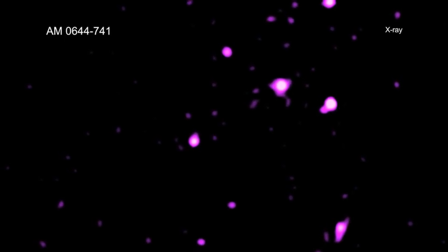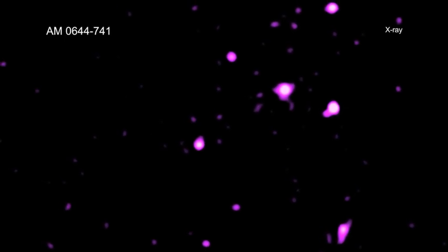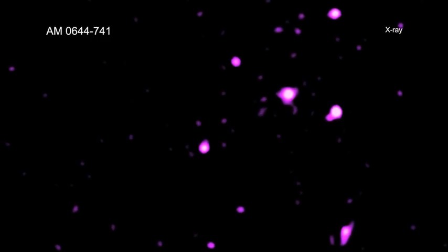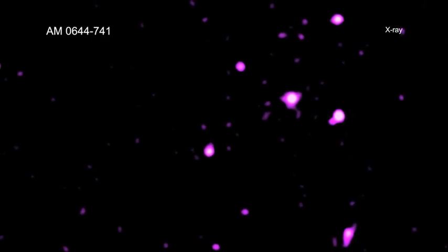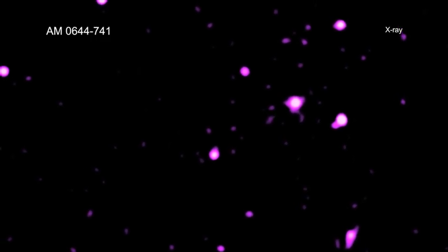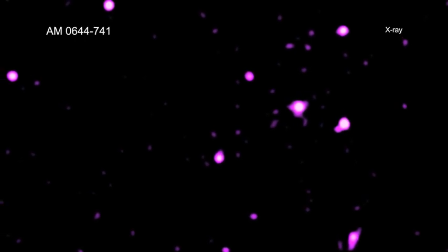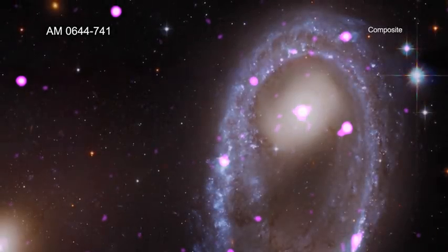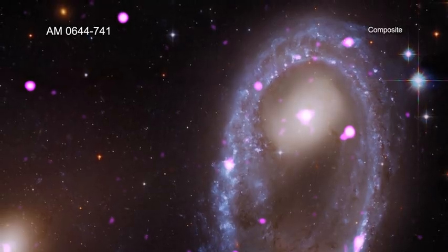Astronomers have used NASA's Chandra X-ray Observatory to discover a ring of X-ray power. This ring sounds like it might belong in Tolkien's Middle Earth, but it is, in fact, found in a galaxy about 300 million light-years from Earth.